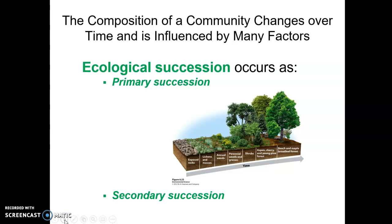The last topic here is ecological succession. We've been talking about individuals, populations, and communities. The makeup or composition of a community can change over time due to many factors. The typical progression of a community starts from one that doesn't really contain any species — just exposed rock.